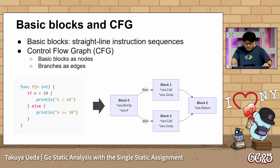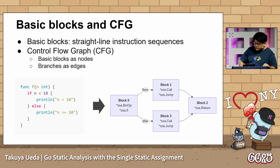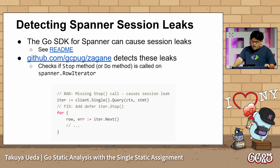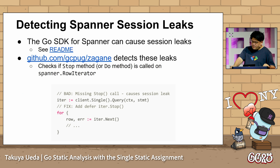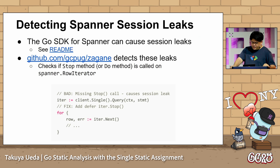Let me show you a concrete example of using SSA for static analysis. Cloud Spanner is a powerful distributed database, but you need to be careful when using the Go SDK. By default, if the session count goes over 400, your application will block. You might see logs about high session count at runtime, but that's too late after deployment. This code example shows a session leak because no stop method is called.